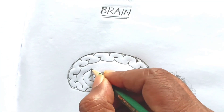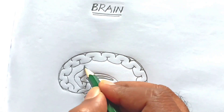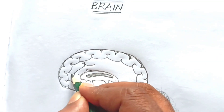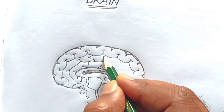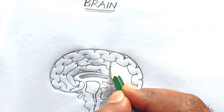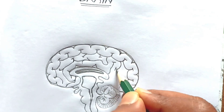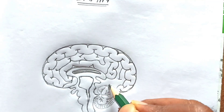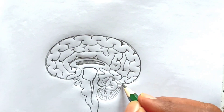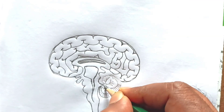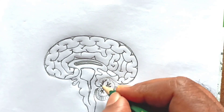It is very easy to draw the brain — you practice like this. Now I am going to darken the cerebellum.